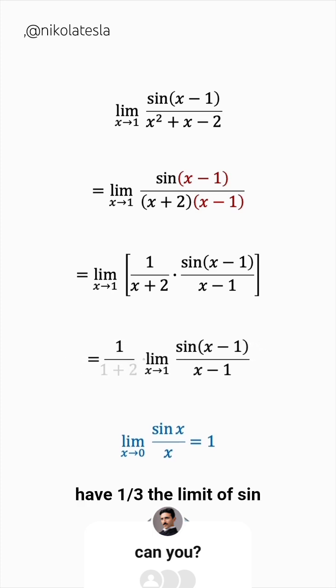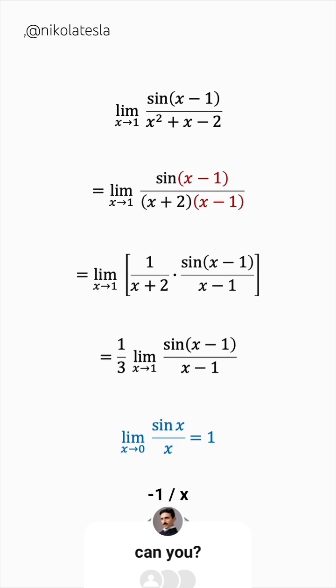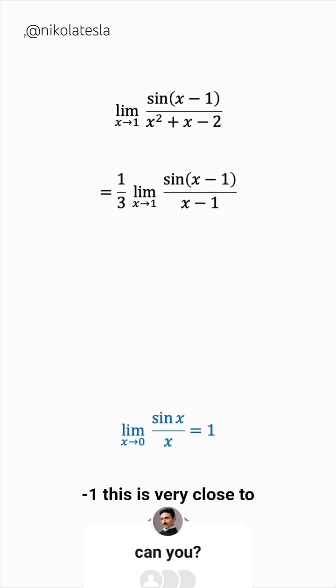So we have one third the limit of sine x minus 1 over x minus 1. This is very close to the form we know and love, all we need to do is replace x minus 1 by a new variable, call it t. This will become the limit of sine t over t.